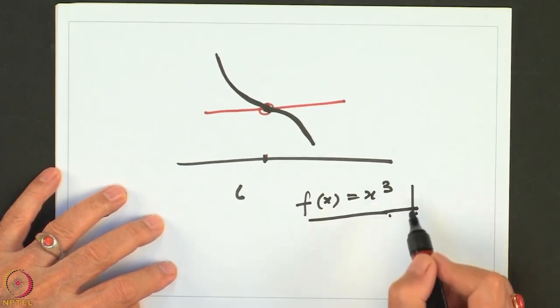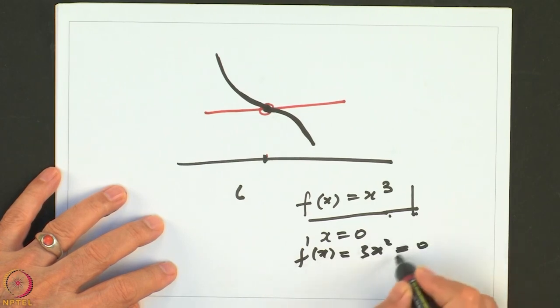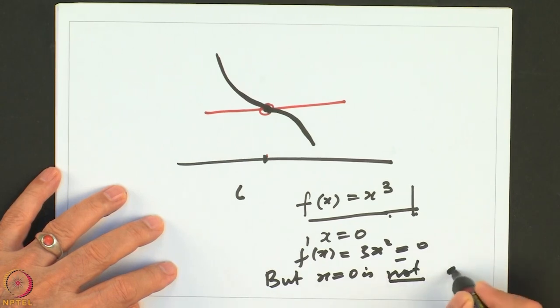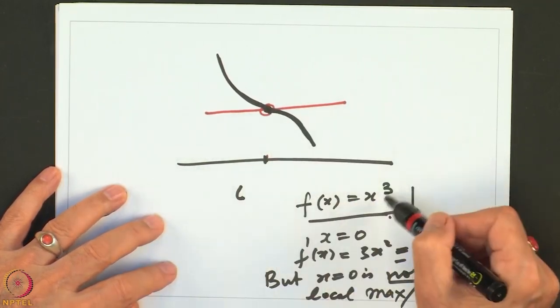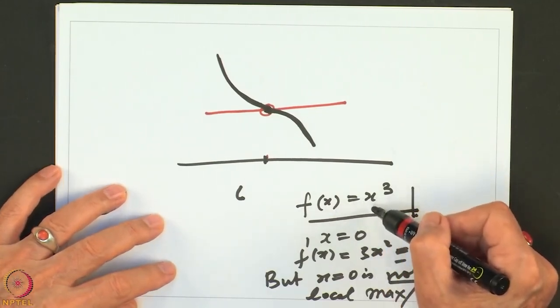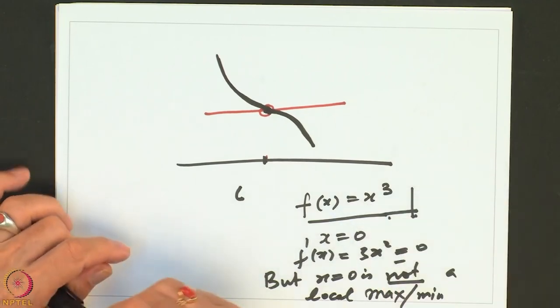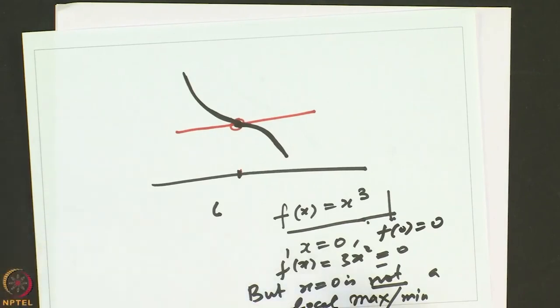For example, consider f(x) = x³. At x = 0, f'(x) = 3x² = 0. But x = 0 is not a local maxima or minima because for x³, when x > 0 f(x) > 0, and immediately on the left of 0 the function is negative. So at 0 — where f(0) = 0 — we cannot say it is a maximum or minimum. Thus 0 is a point of neither maximum nor minimum even though the tangent is horizontal.